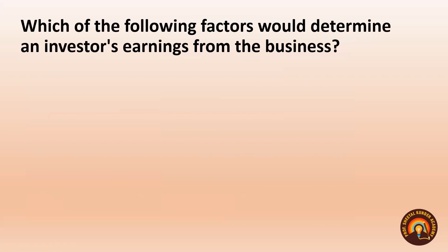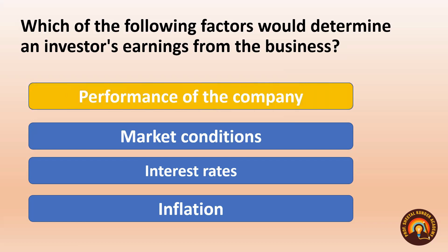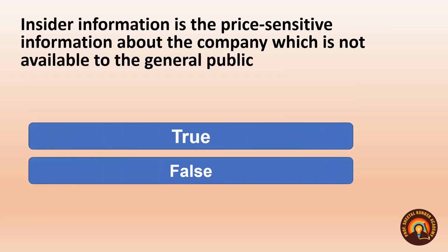Next: Which factors determine an investor's earnings from a business? Options: Performance of the company, Market condition, Interest rate, Inflation. Earnings require data — which comes from the performance of the company: company's sales, profit, net worth. These give investors the information needed to determine earnings from the company.